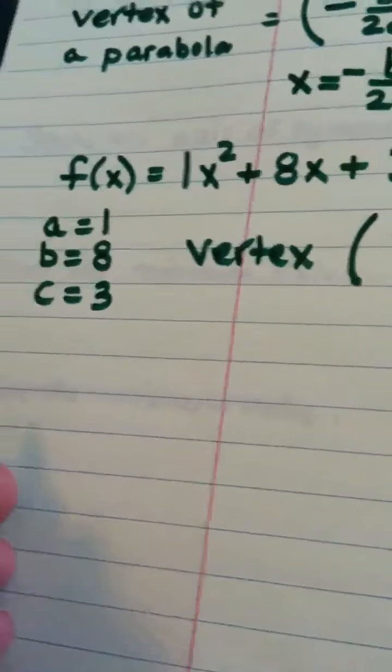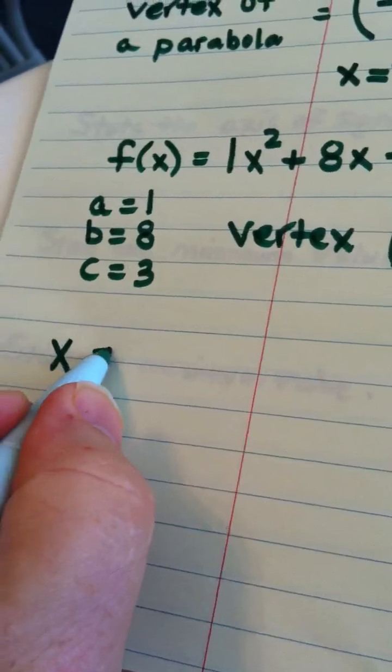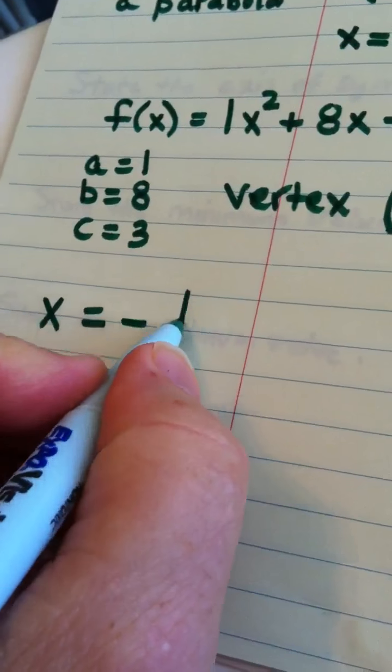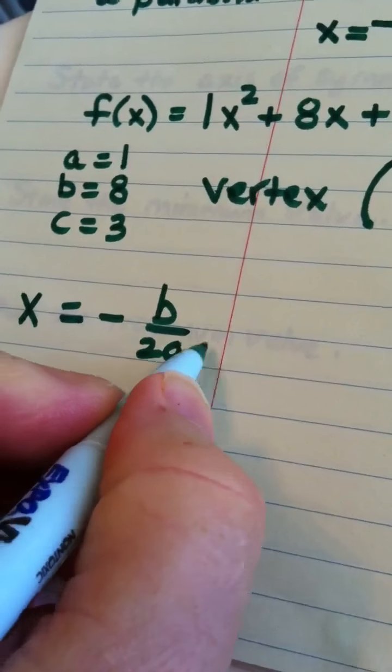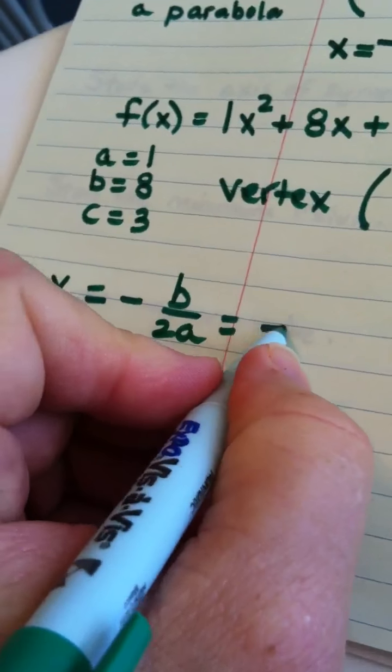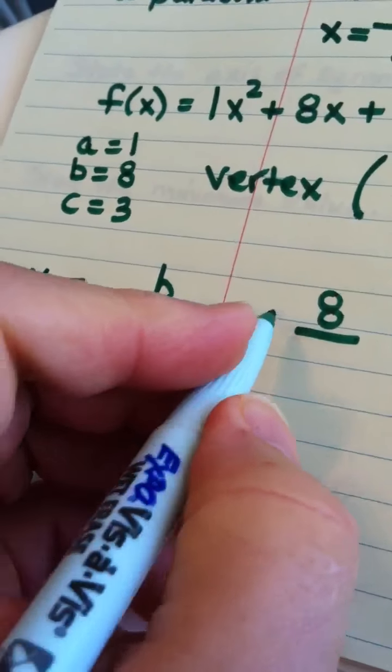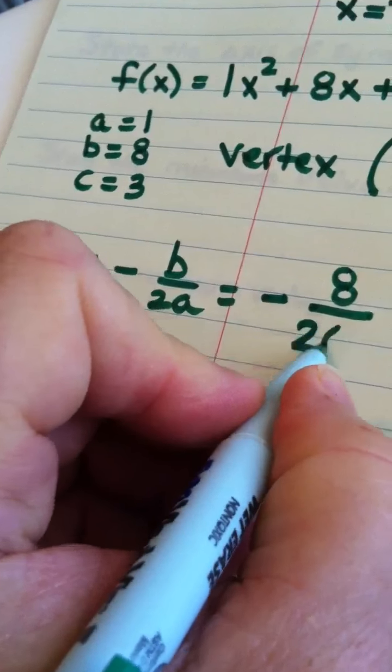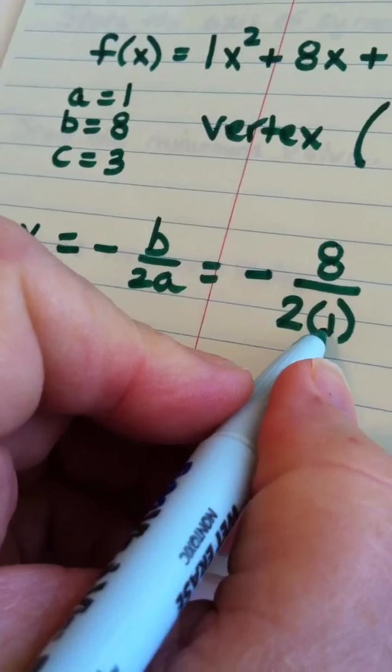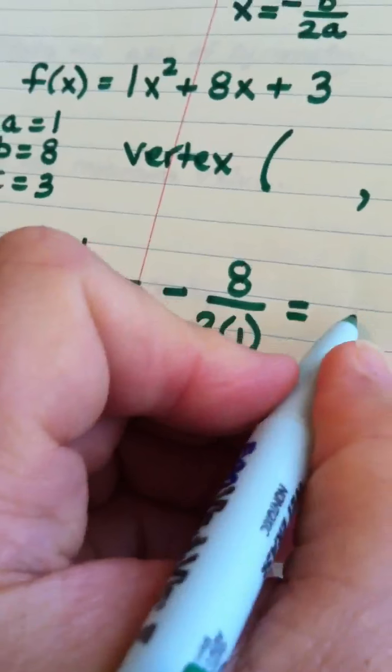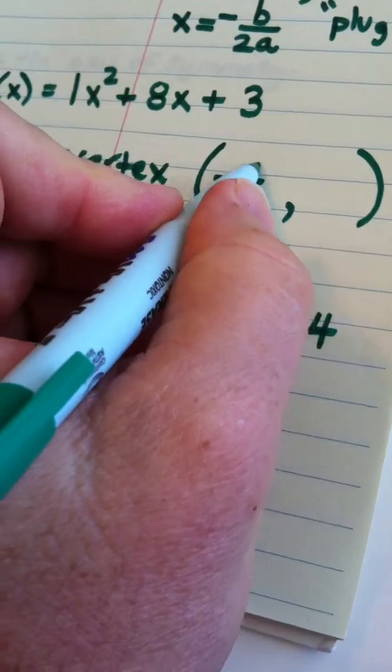x is equal to the opposite of b over 2 times a. So, that would be the opposite of b, which is 8, over 2 times 1. That's a. So, that would turn out to be a negative 4.